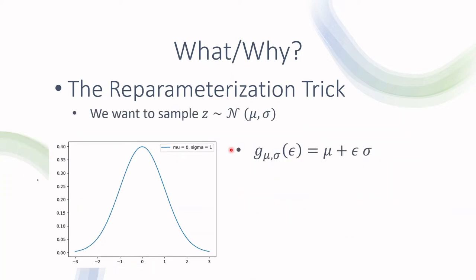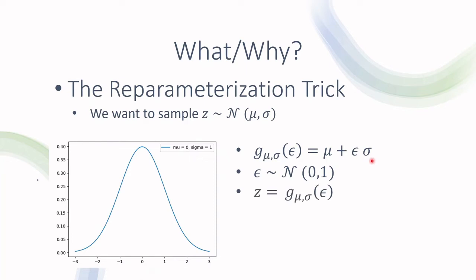A bit more formally, it looks like this: if we want to sample z from some normal distribution, we can actually define a function g which is parameterized by mu and sigma. We take from a known standard normal distribution, where mu is zero and sigma is one, some variable epsilon, and we feed it to that function. What that function does is add mu and multiply by sigma, and that is equal to z — that is equivalent to having sampled z from the target distribution.